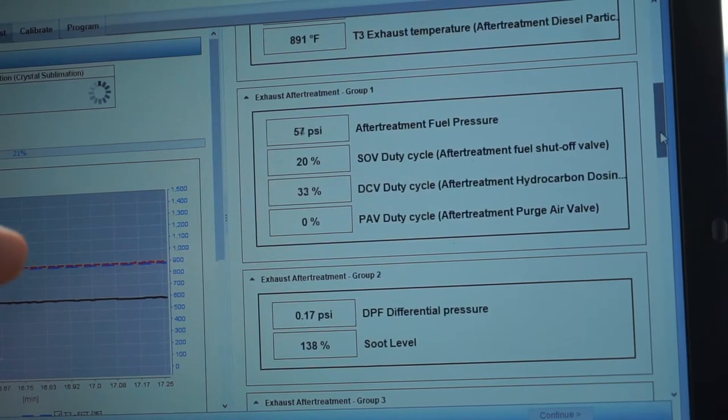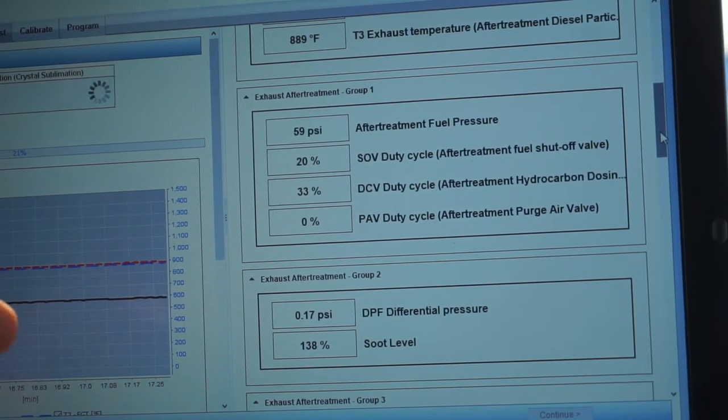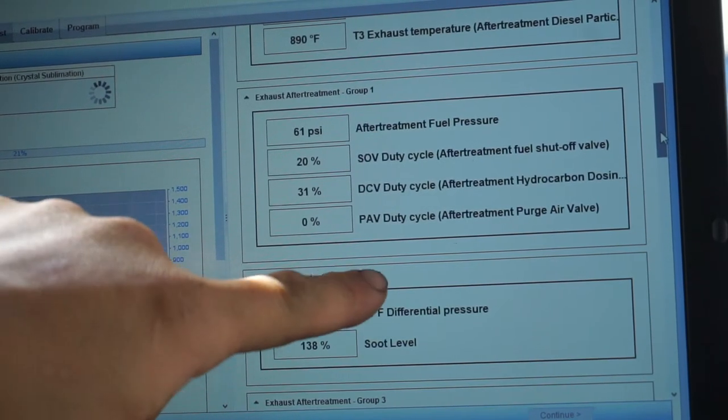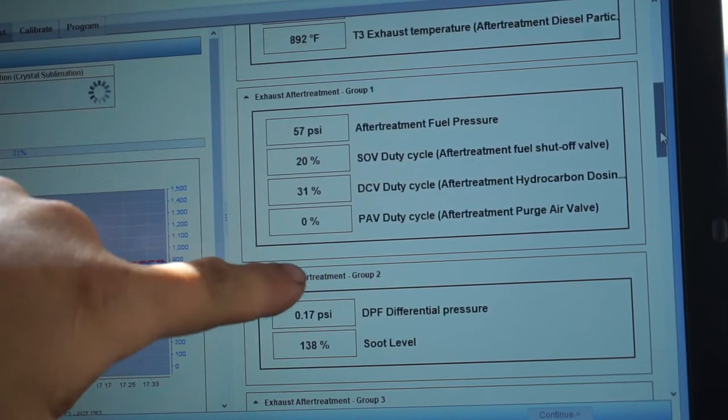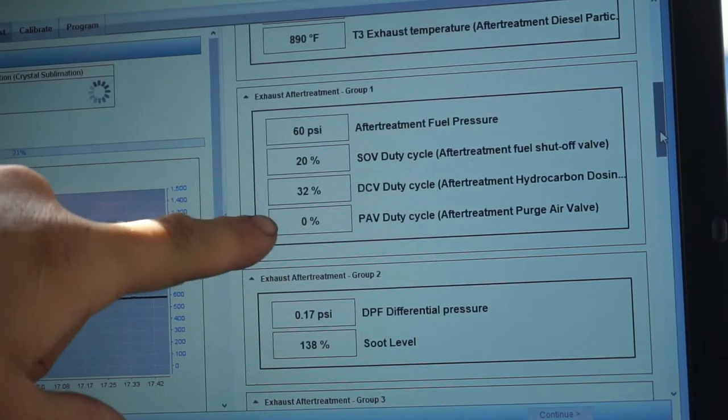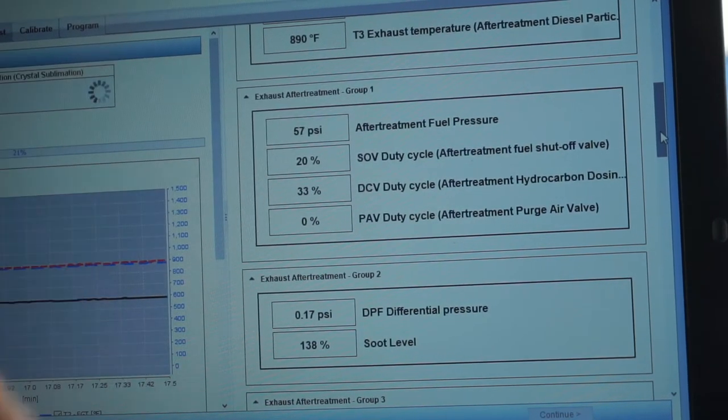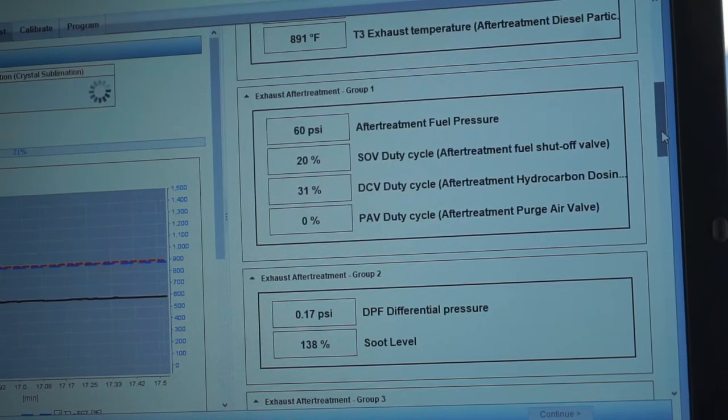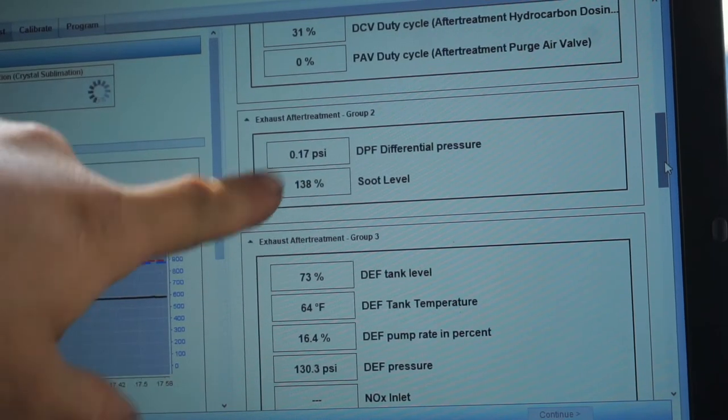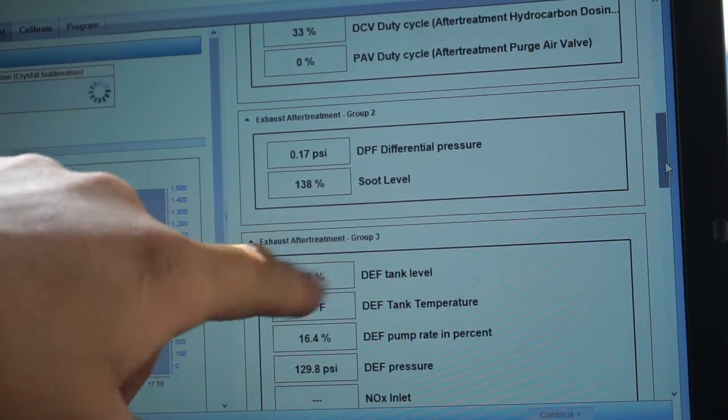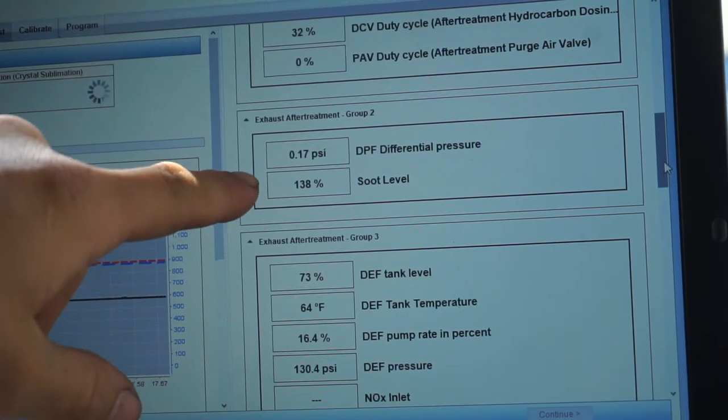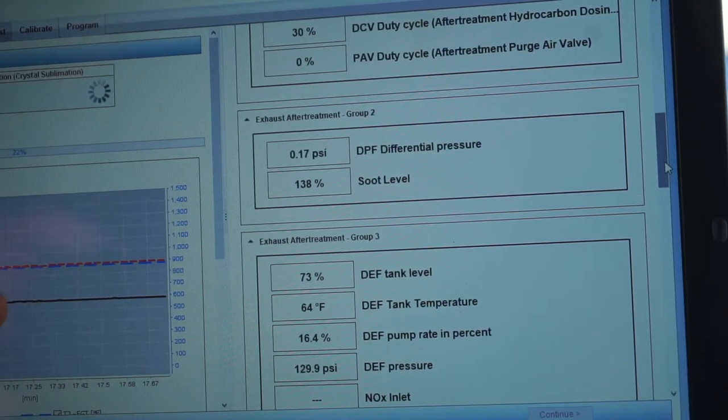It's going to give you the fuel pressure, the fuel shutoff valve, the hydrocarbon dosing valve, the doser valve on here, and then the after treatment purge air valve is going to show you all those percentages and whether or not they're working. The DPF differential pressure and then the soot level. The soot level is at 138. Obviously that's what you're concerned with, you want to bring that down. That's what's causing these issues, that's what's making the motor run like garbage.